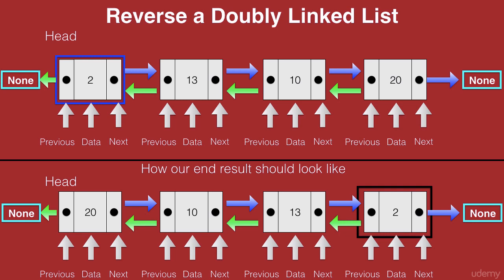What points to the next of 2 in the existing list points to the previous of 2 in the reversed list, and what points to the previous of 2 in the existing list points to the next of 2 in the reversed list. So if we swap the next and previous pointers in our existing list, we arrive at a solution to this problem. Let's swap the pointers.